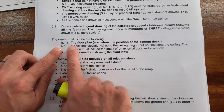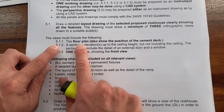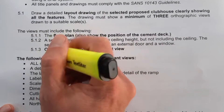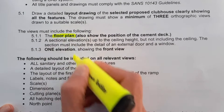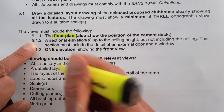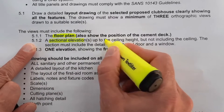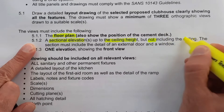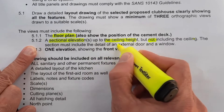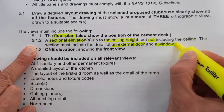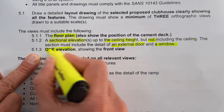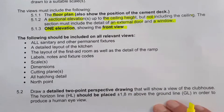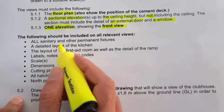The first one asks that you complete the floor plan, which must also show the position of the cement deck. Then 5.1 talks about a sectional elevation that goes up to the ceiling height but not including the ceiling — this section must include the detail of an external door and a window. Then you have one elevation that must be the front view of your clubhouse.